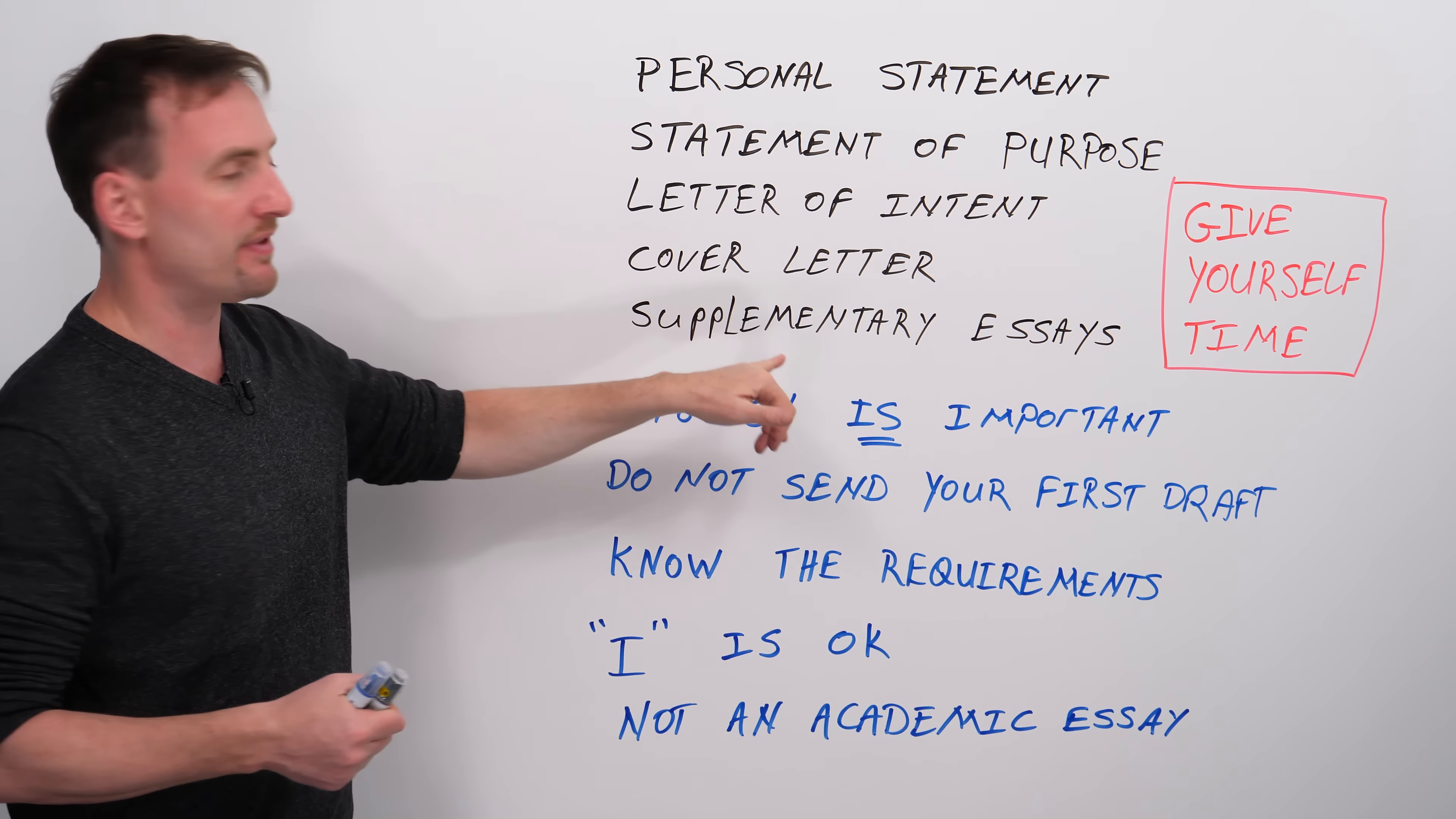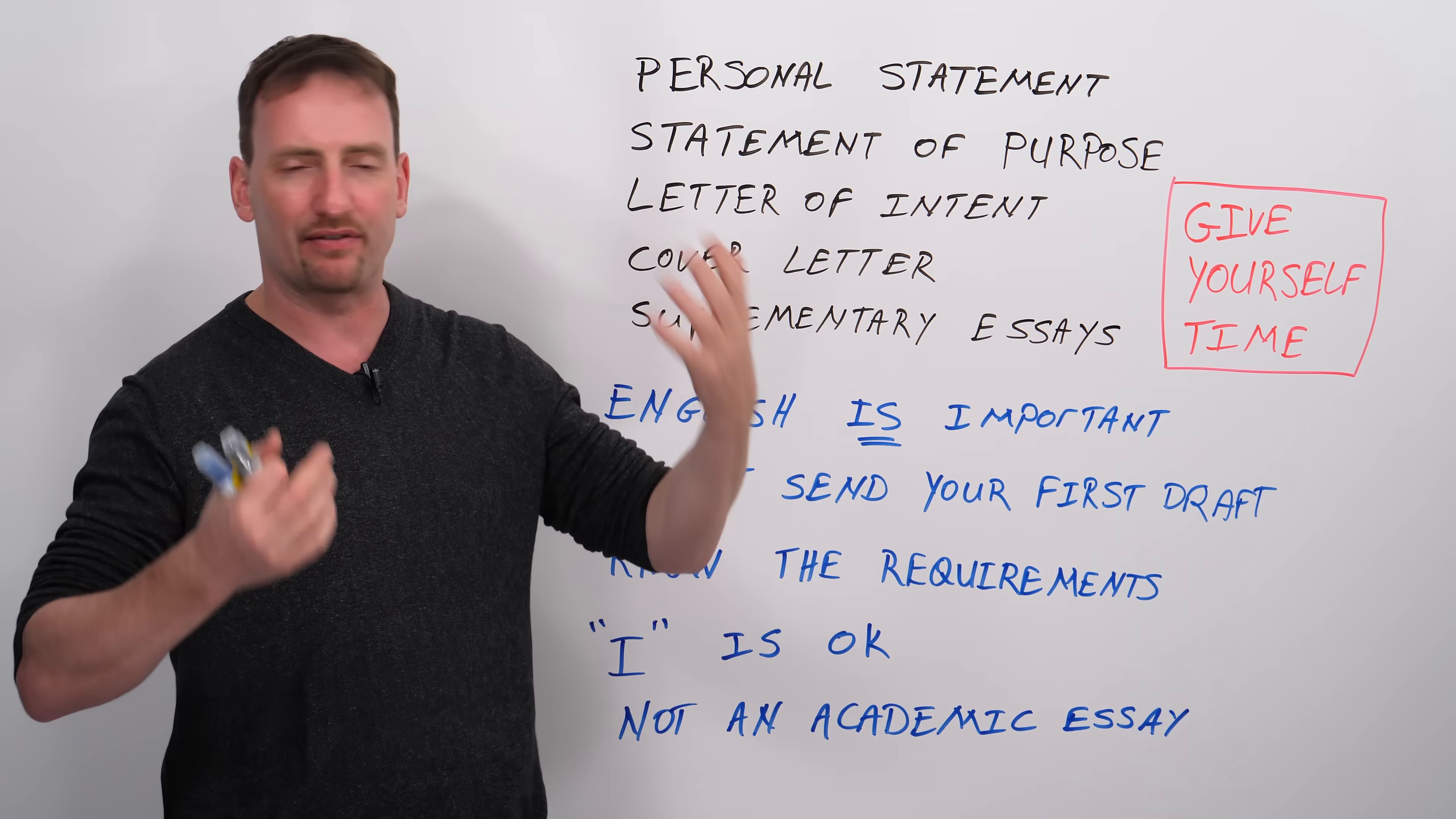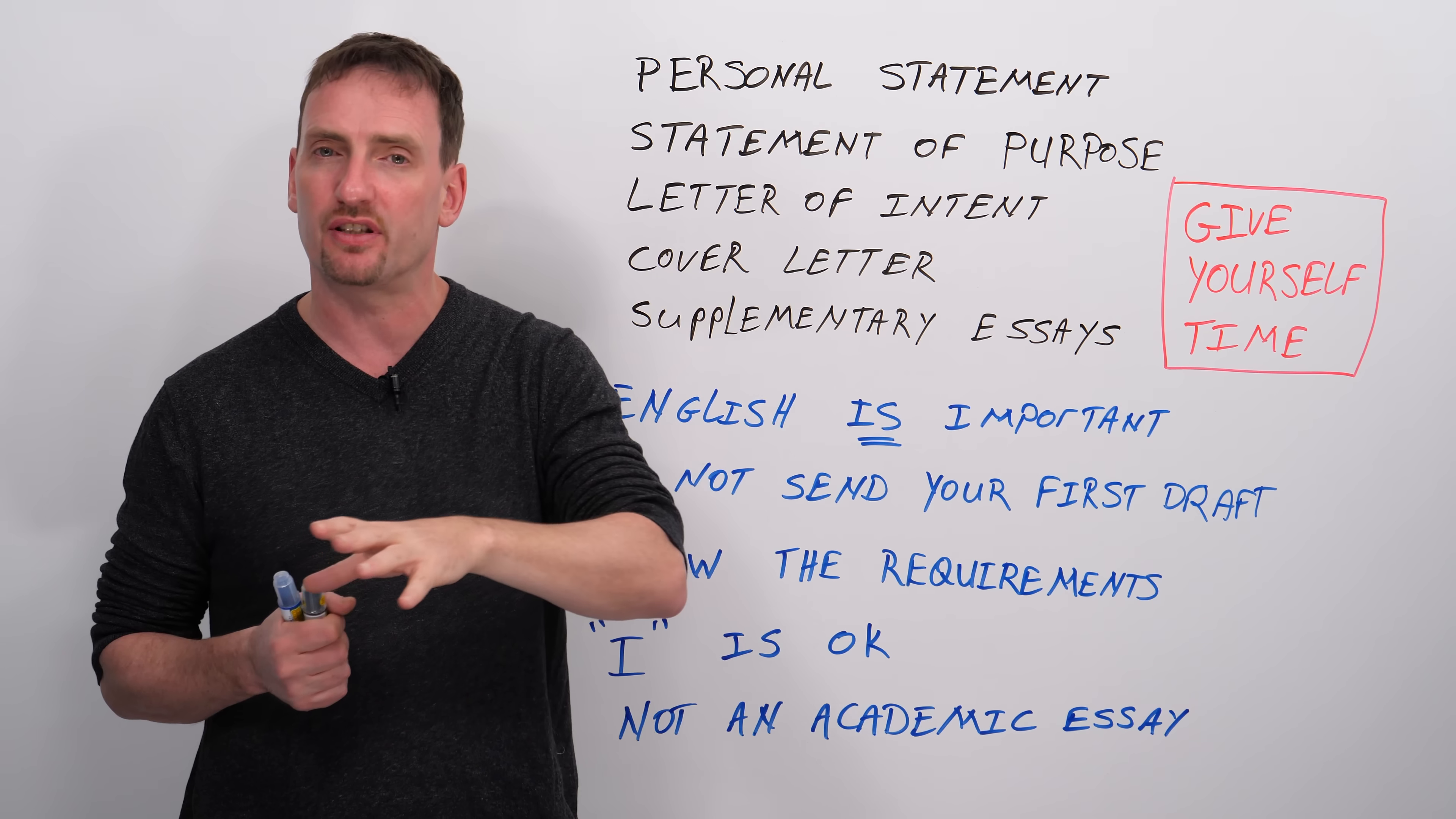So, first, what are the types of things you're going to need to write as part of your university application? Some schools will ask for a personal statement. Others will ask for a statement of purpose, especially graduate schools, or a letter of intent.